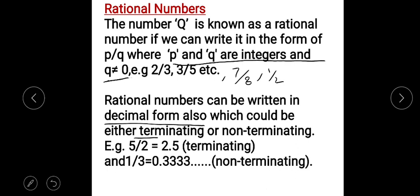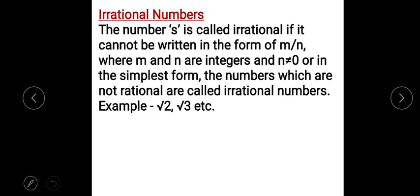Rational numbers can also be written in decimal form. The decimal expansion of rational numbers can be either terminating or non-terminating. For example, 5/2 = 2.5, which is terminating. And 1/3, when written in decimal form, is 0.3333... or 0.3̄, which is non-terminating.